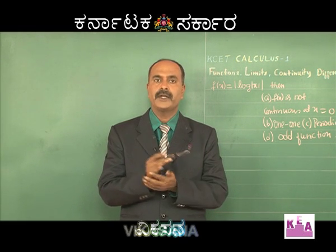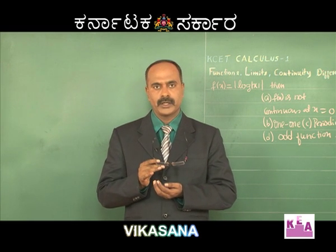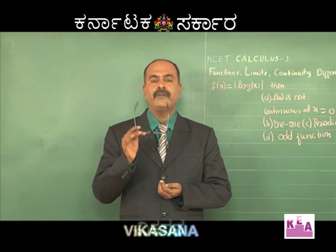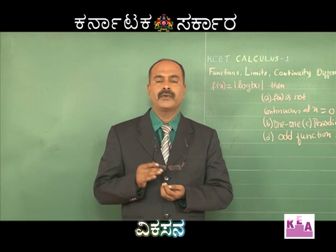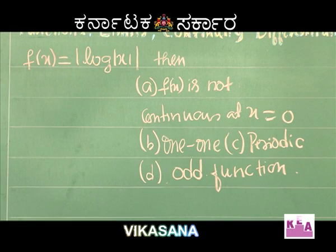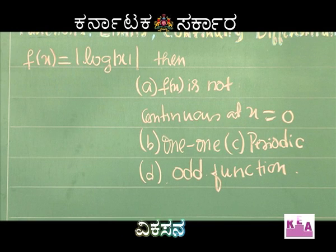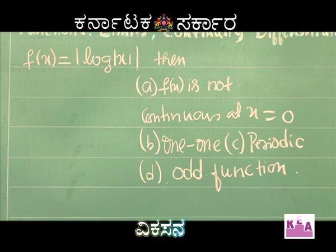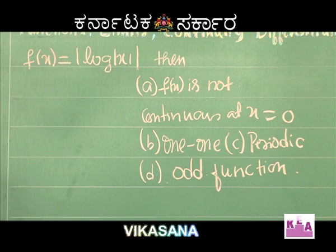The test of continuity is almost based on the concept of limits. I will be introducing new shortcuts, new graphs, or new methods every so often. Whenever I am taking a new problem, look at this question: f(x) = |log|x||. Option a is: f(x) is not continuous at x = 0; option b is 1-1; option c is periodic; and option d is odd function.